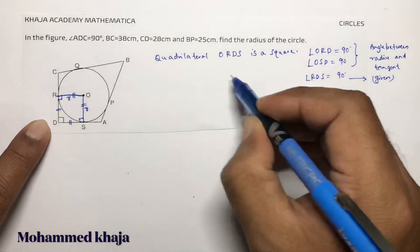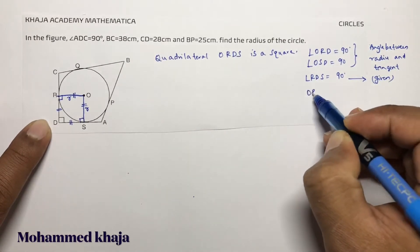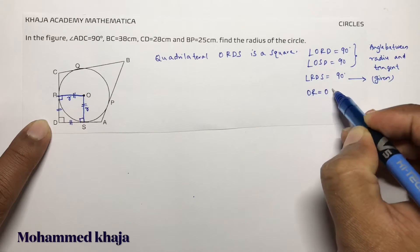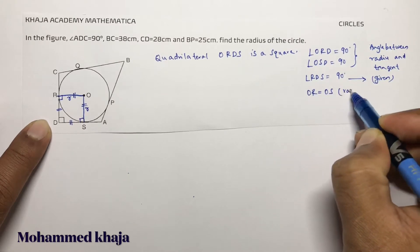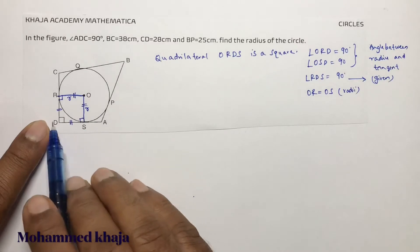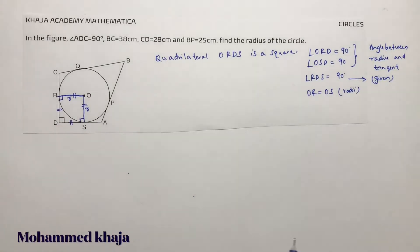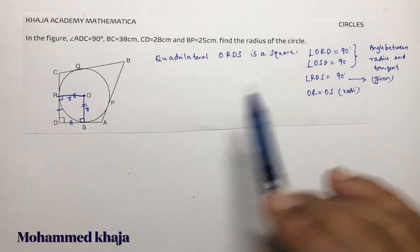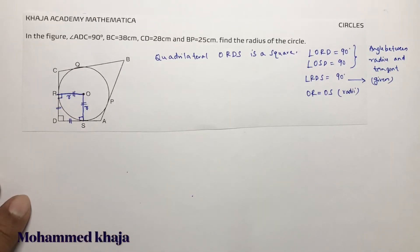And one more thing: OR equals OS, this is because radii. And DS equals DR also, you can write. So because of all these reasons, it is a square.